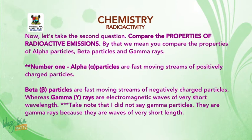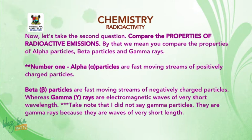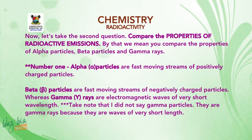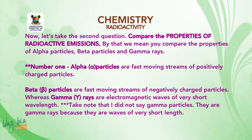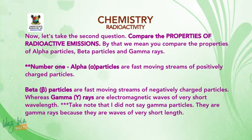The second question: compare the properties of radioactive emissions — that is, compare alpha particles, beta particles, and gamma rays. Number one: alpha particles are fast-moving streams of positively charged particles. Beta particles are fast-moving streams of negatively charged particles. Gamma rays are electromagnetic waves of very short wavelength — note that they are rays, not particles. Number two: alpha particles have a mass of four units each. Beta particles, being streams of electrons, have negligible mass. We cannot talk about the mass of gamma rays as they are waves.